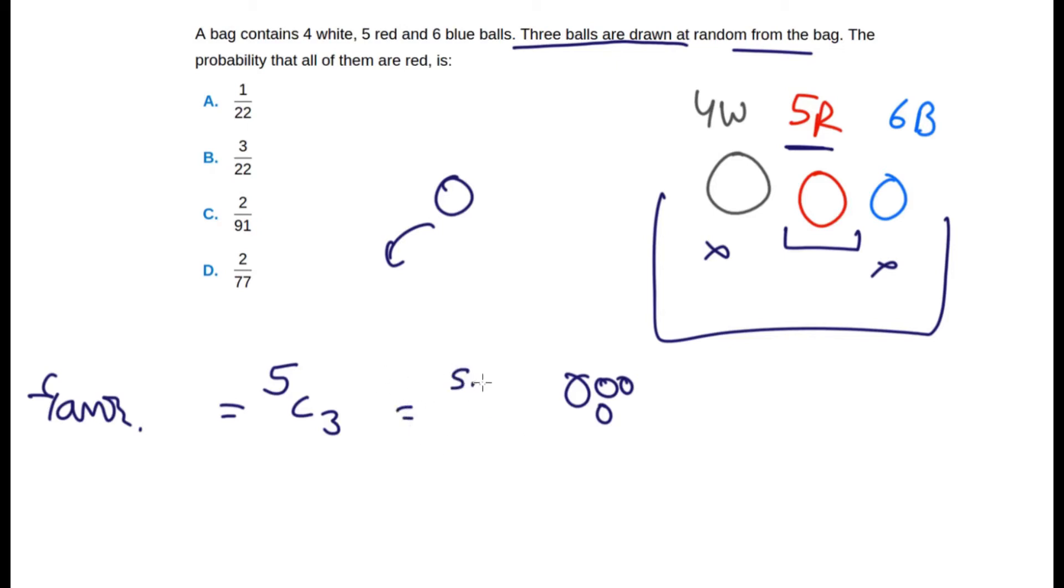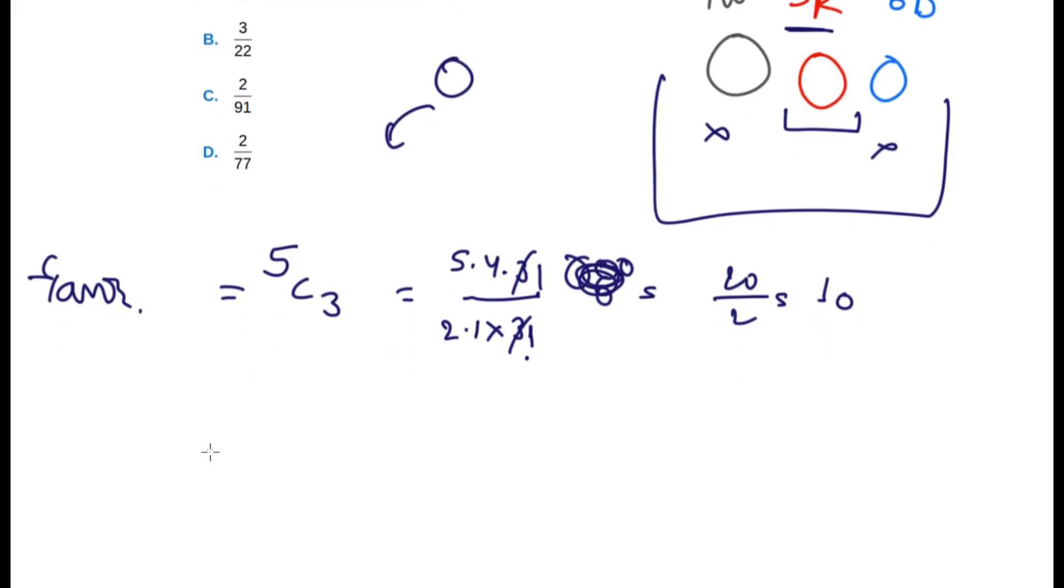5 factorial divided by 3 factorial times 2 factorial, which will be cut, and we'll get 5 times 4 divided by 2, which is 10.